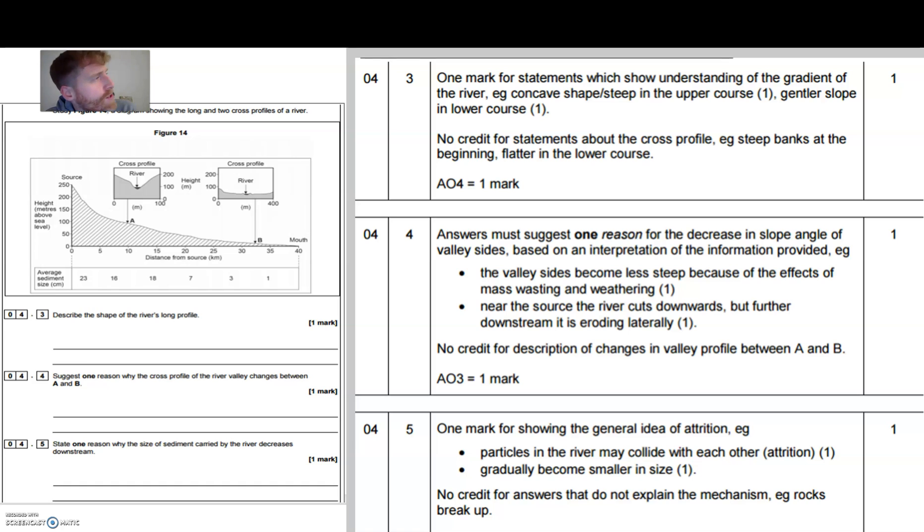Next one, and this is similar to a question you did on your coast assessment when we looked at the average size of sediment at point A on a spit and point B on a spit which was further down, which some of you struggled with. So I thought I'd put this question in but in the context of a river. It said state one reason why the size of sediment carried by river decreases downstream. So again, one mark, and you just had to show the general idea of attrition.